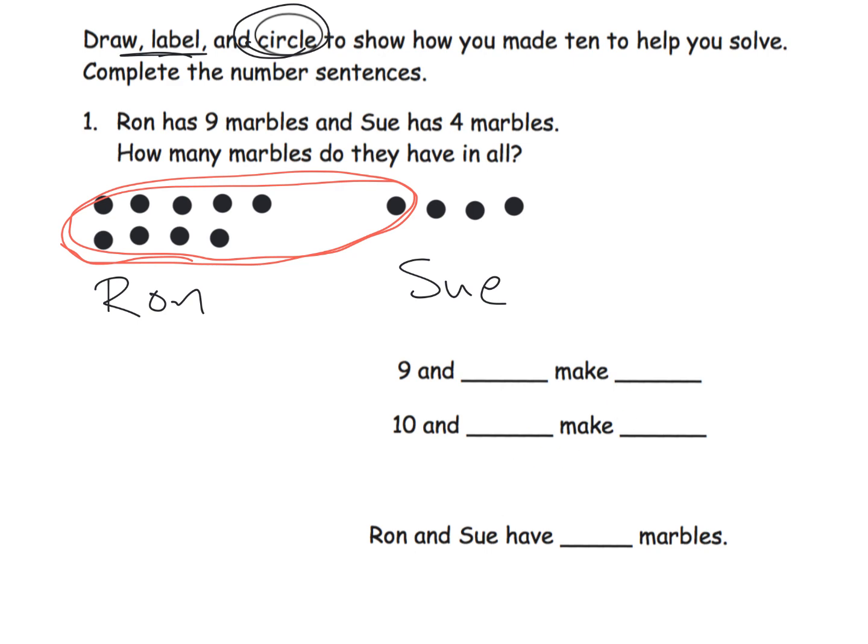That's the drawing, labeling, and circling. So now we're gonna complete the number sentences. It says 9 and 4 make 13. Now, parents and teachers, how did the kid get 13 at this point? Well, they might have counted 9, 10, 11, 12, 13—that's the count-on method. You start with 9 and then you count on four more. Or they may have used the count-all method and started from scratch: 1, 2, 3, 4, 5, 6, 7, 8, 9, 10, 11, 12, 13.